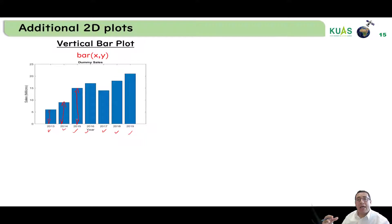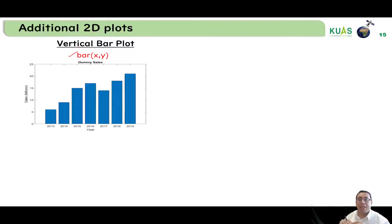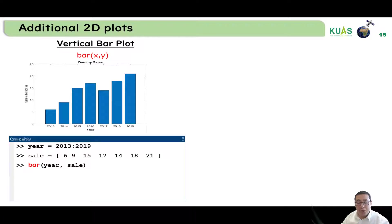The general form for the bar plot is: bar(x, y), where x and y can be vectors and if they are vectors they should have the same length. Let's take a quick example.